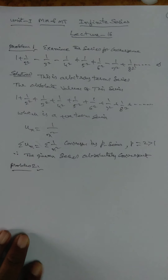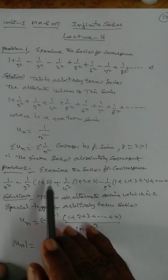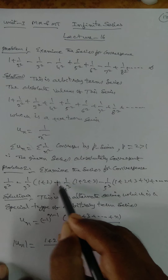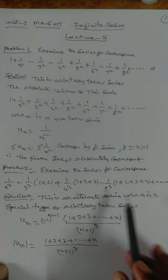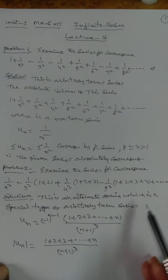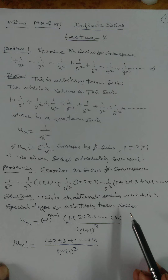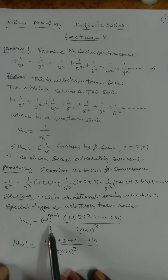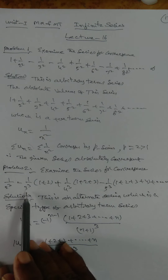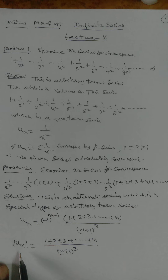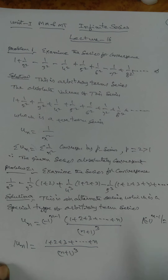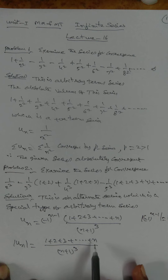Problem 2: Examine the series for convergence. The series is 1/2³ − (1/3³)(1+2) + (1/4³)(1+2+3) − (1/5³)(1+2+3+4) + ... and so on to infinity. This is an alternating series, a special type of arbitrary term series with + − + − signs. So Uₙ = (−1)^(n−1) · (1+2+...+n) / (n+1)³. Taking |Uₙ|, since |(-1)^(n-1)| = 1, we get (1+2+...+n)/(n+1)³.